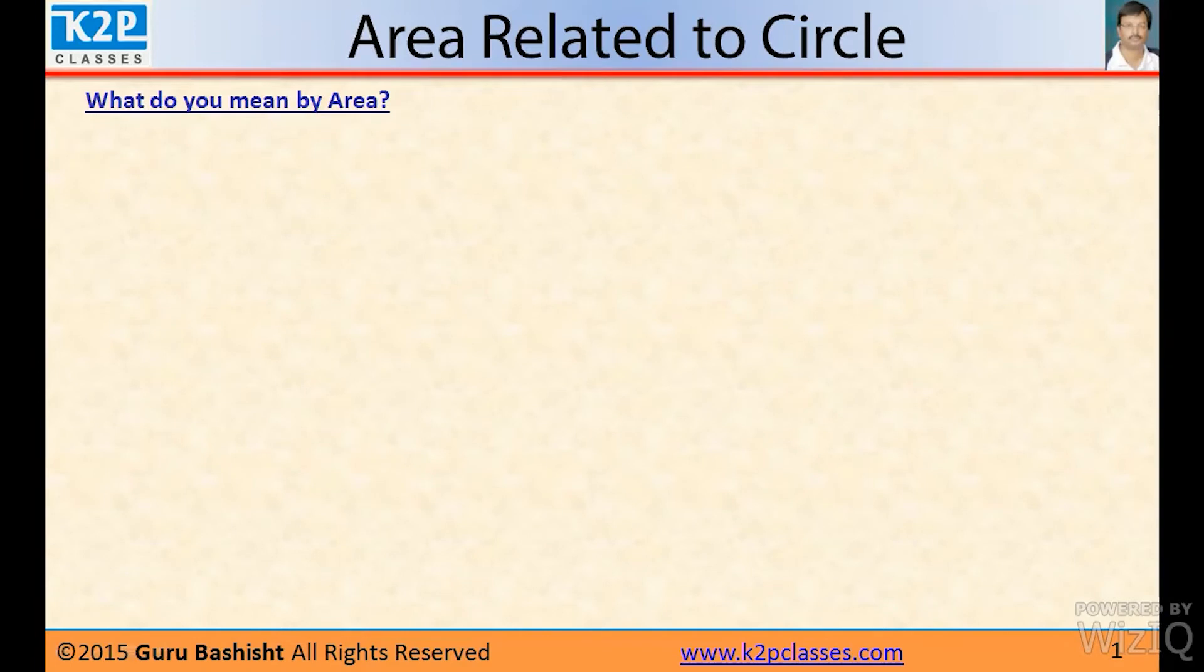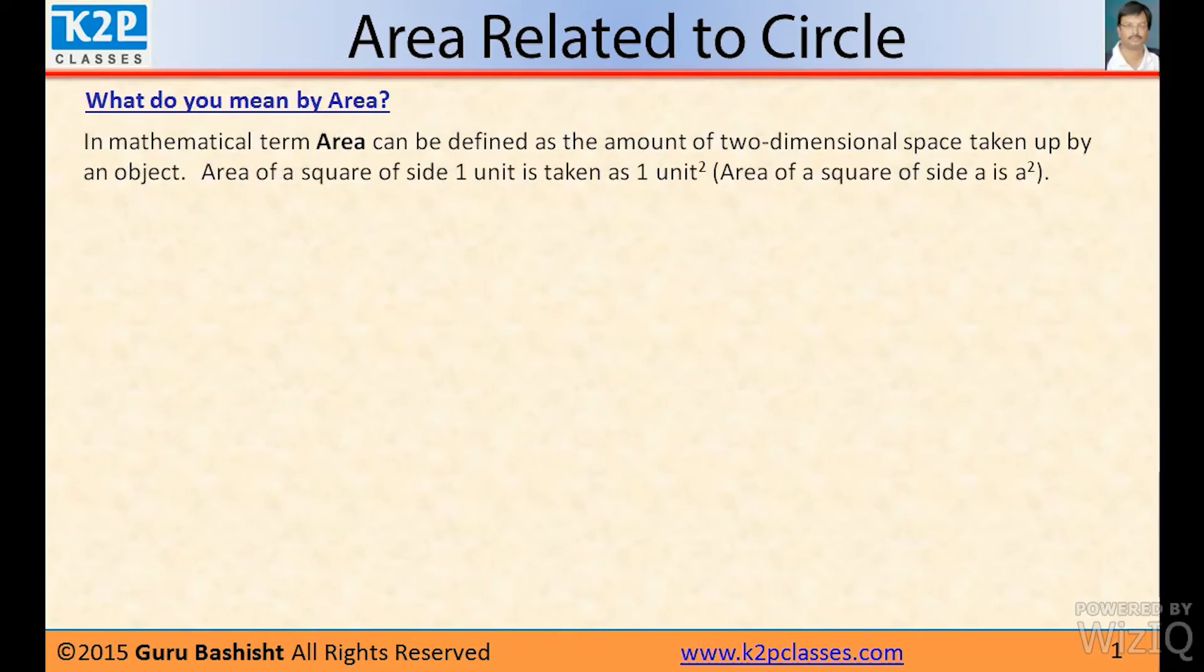What do you mean by area? In mathematical terms, area can be defined as the amount of two-dimensional space taken by an object. Area of a square of side one unit is taken as one unit square. Area of a square is side multiplied by side. So if side of a square is A, then area of the square will be A².